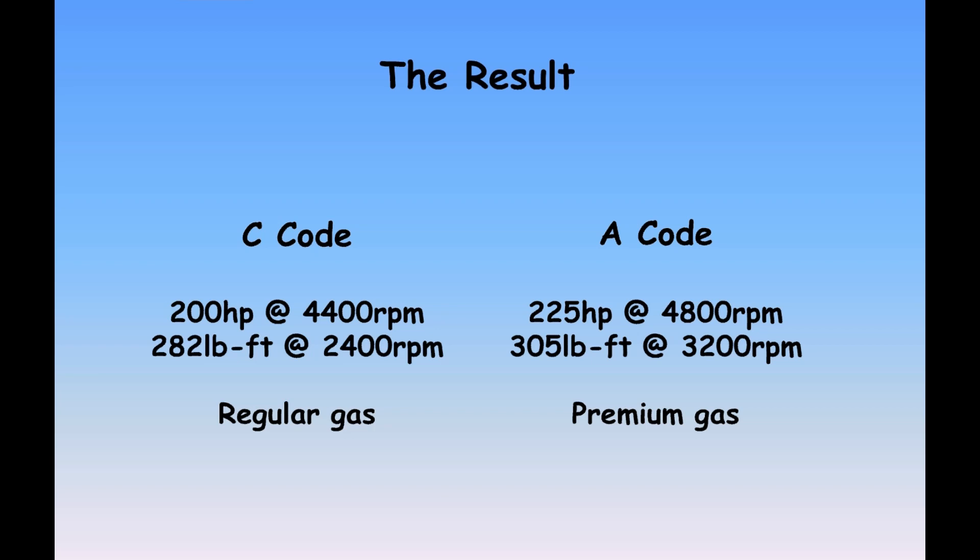The one I'm really interested in is the torque curve, and that's where I think the real difference comes into play between the C-code and the A-code. The C-code has 282 foot-pounds of torque at 2,400 RPM; the A-code raises that to 305 foot-pounds, but 800 RPM higher at 3,200 RPM. So as you're pulling through the gears and watching that tachometer climb, the C-code peaks its torque at 2,400 RPM, while the A-code keeps pulling harder past that point and is still increasing torque all the way to 3,200 RPM.